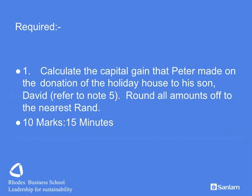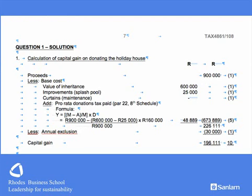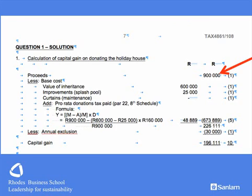Now we go back to required. Part one — for 10 marks over 15 minutes — we calculate the capital gain resulting from the donation of a holiday home. We start by finding the market value of the donation: that's R900,000. Then we establish base cost — that's the value of the inheritance received per the question, plus the improvements consisting of the splash pool. The curtains do not get added to base cost. So we have established base cost and proceeds.